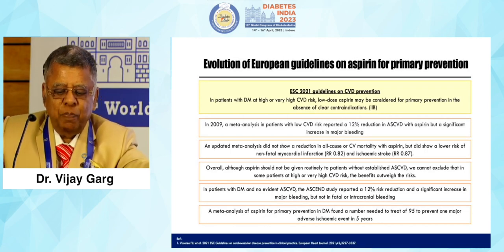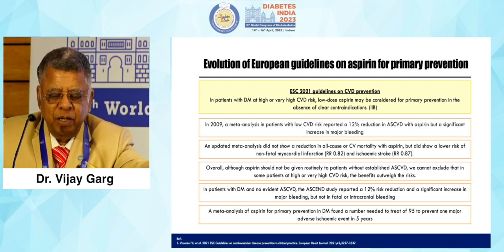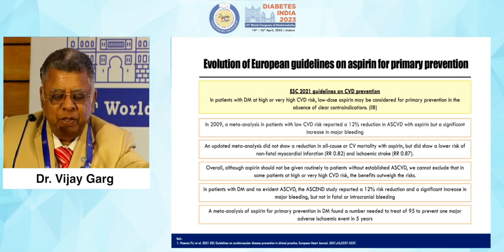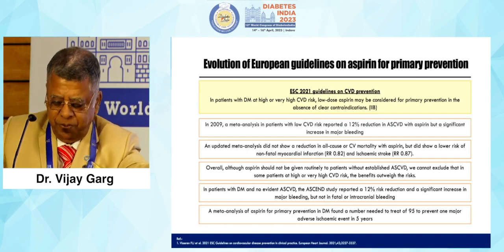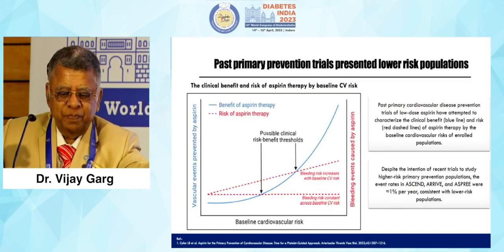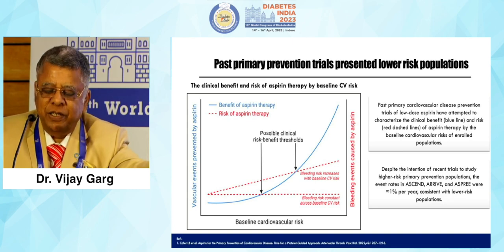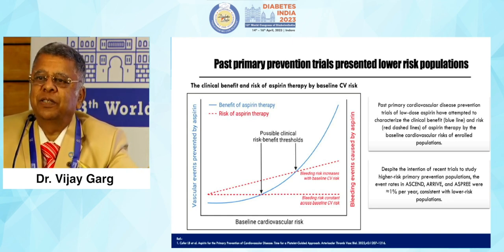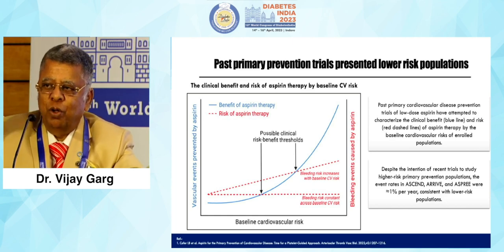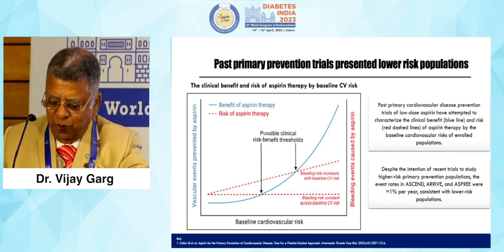The European guideline similarly states: in patients with diabetes mellitus or high CVD risk, low-dose aspirin may be considered for primary prevention in the absence of clear contraindications. Importantly, as the cardiovascular risk increases, the bleeding risk also increases. So if the risk is low, bleeding risk is also a concern — we have to account for this carefully.